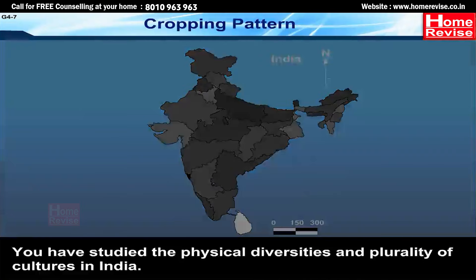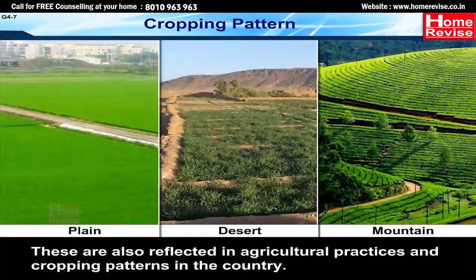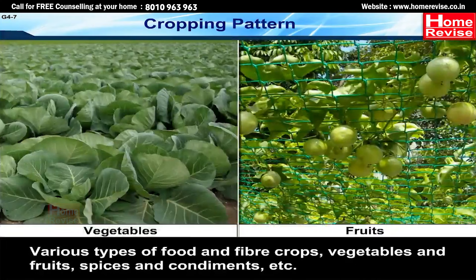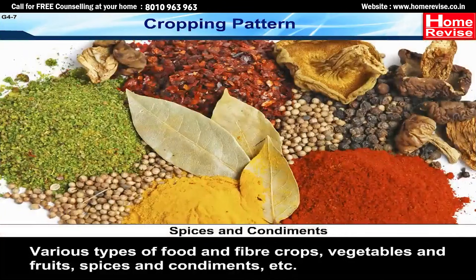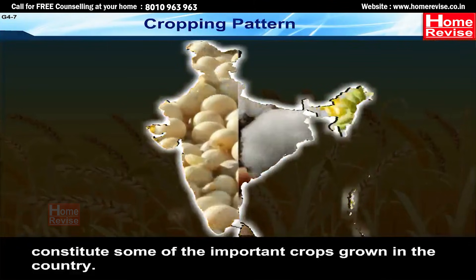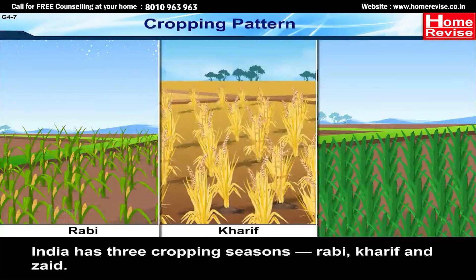Cropping pattern: India's physical diversities and plurality of cultures are also reflected in agricultural practices and cropping patterns in the country. Various types of food and fiber crops, vegetables and fruits, spices and condiments etc. constitute some of the important crops grown in the country. India has three cropping seasons: Rabi, Kharif, and Zaid.